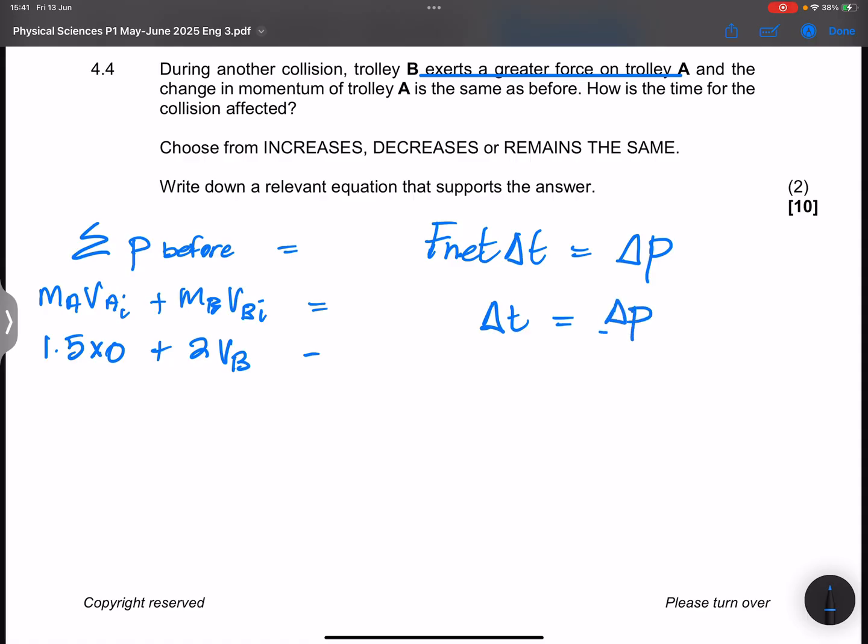Change in momentum stays the same, divided by the net force. So I want you to please note that what they are saying is that the force is increased. So what will happen to the time? They are inversely proportional to each other. So our answer is that it decreases. To support it with a relevant equation, it is this very equation: F net times delta t equals delta p. You can indicate with your arrows that your net force is increased whilst your time is decreased. And that is how the cookie crumbles on this question.